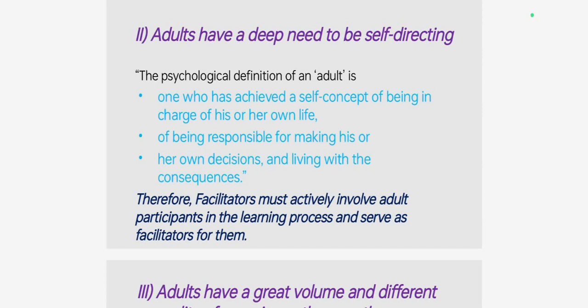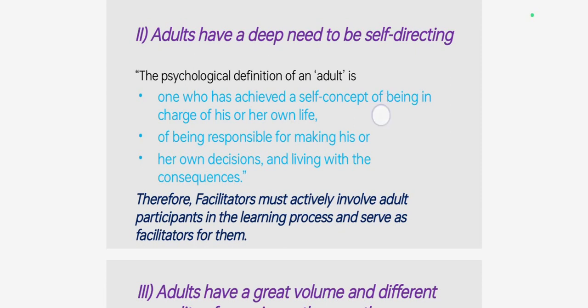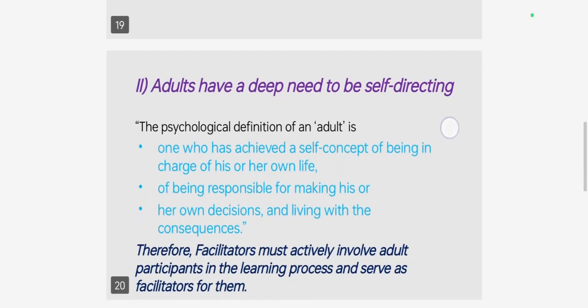The second characteristic of adults is that adults have a deep need to be self-directed. What does this mean? Psychologists define an adult who is self-directed as one who has achieved a self-conscious of being in charge of his or her own life, or being responsible for making his or her own decisions and living with the consequences.